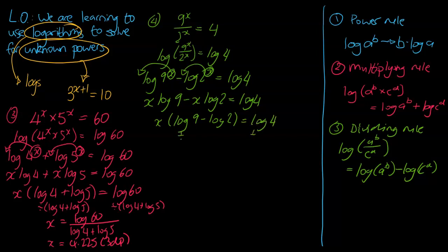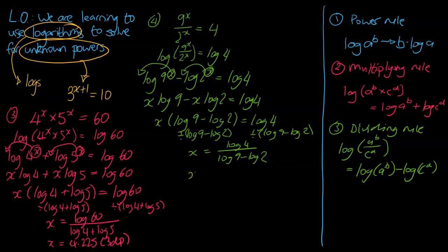We're going to divide both sides by (log 9 minus log 2). So x equals log 4 divided by (log 9 minus log 2). Pop that into your calculator — remember that bottom part needs a bracket to work properly. Your answer should be 0.922, rounded to 3 decimal places.